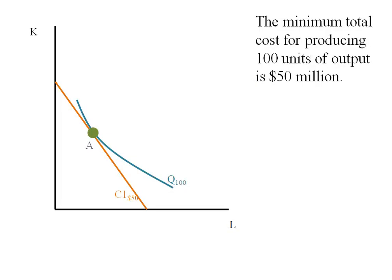Here we have an isoquant and an isocost line, and we're supposing that the minimum total cost for producing 100 units of output is $50 million. We've got our tangency here at point A of our isoquant producing 100 units, and the isocost line tells us it costs $50 million.